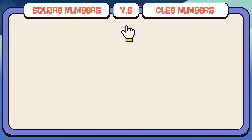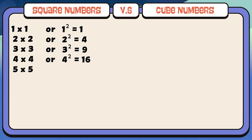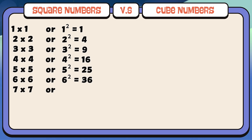Square number versus cube number. Let's start with square numbers. One times one or one square is equals to one. Two times two or two square is equals to four. Three times three or three square is equals to nine. Four times four or four square is equals to sixteen. Five times five or five square is equals to twenty-five. Six times six or six square is equals to thirty-six. Seven times seven or seven square is equals to forty-nine.